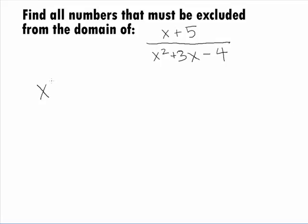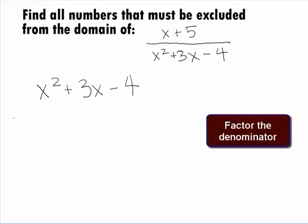Let's extract out the denominator and write x squared plus 3x minus 4. Next, we want to factor this and when we do that, we're going to get x minus 1 times x plus 4.